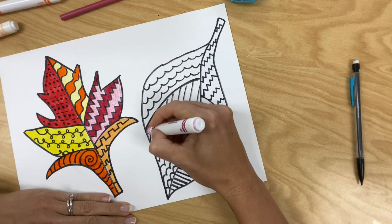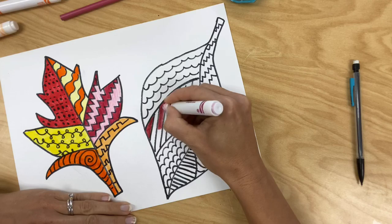Once you've finished filling in one leaf using only warm colors, you're moving on to your second leaf. And again, only using warm colors.